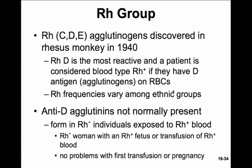The RH group comes from naming in the rhesus monkey, where it was first discovered. There are C, D, and E agglutinogens. D is the most reactive, and a patient is considered RH positive if they have the D antigen on their red blood cells. RH frequencies vary among ethnic groups — among American whites, there's about an 85% frequency of RH positive, and in Asians it's about 99%.